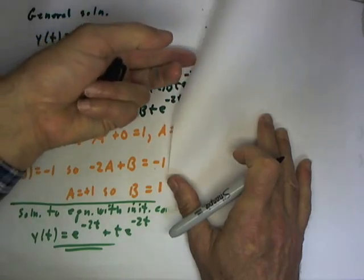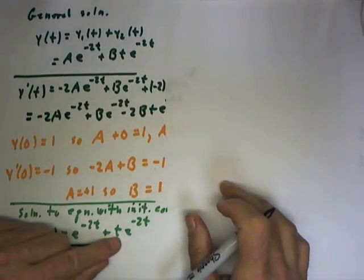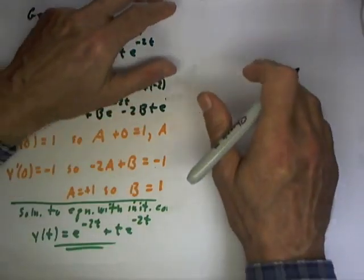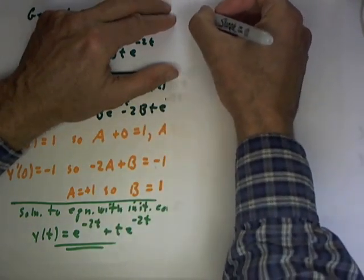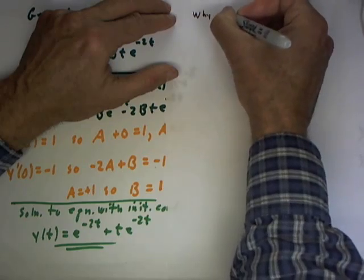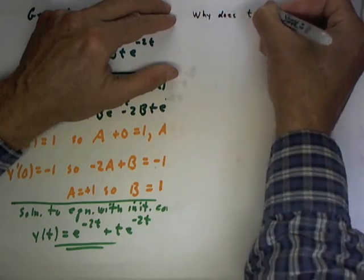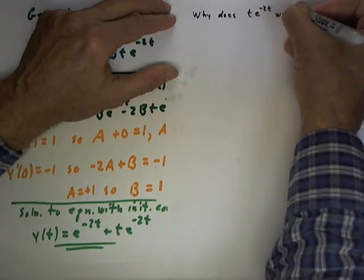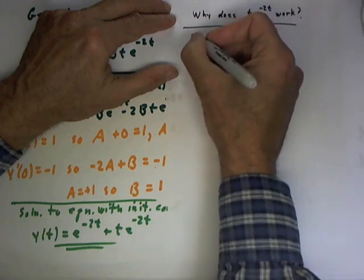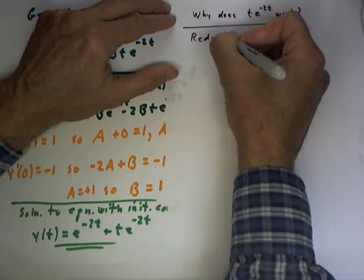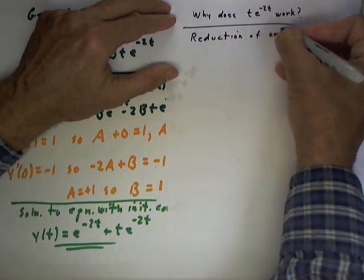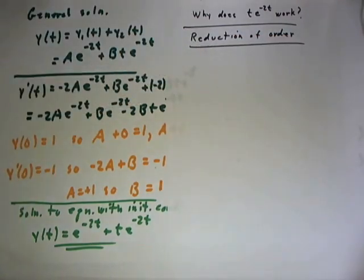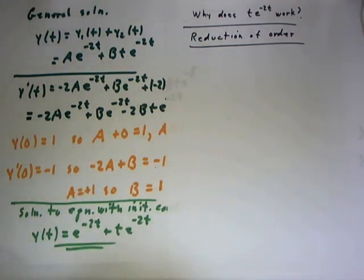We begin to address the question of why does that T inserted in front of the repeated solution work? The answer is there's a process that's frequently used in differential equations entitled reduction of order, and this is really the first place you're likely to have seen it.